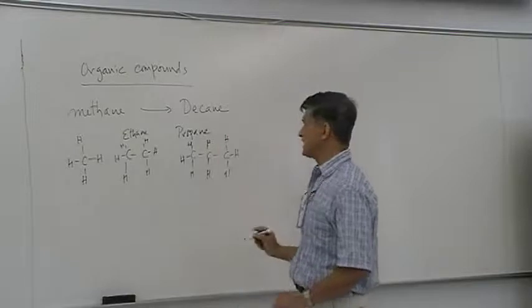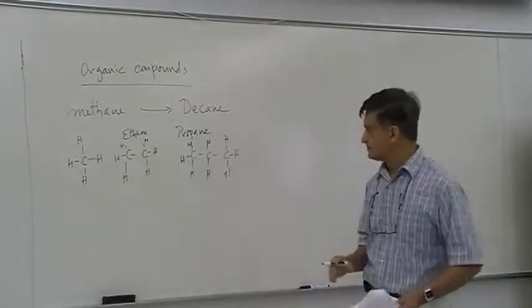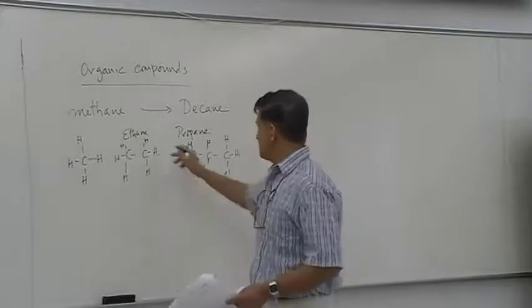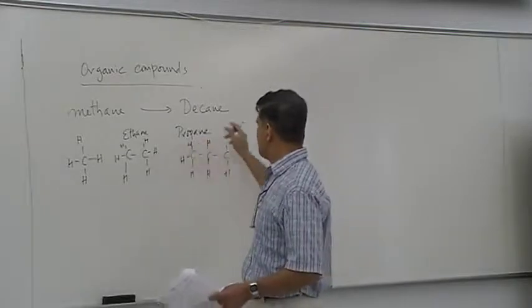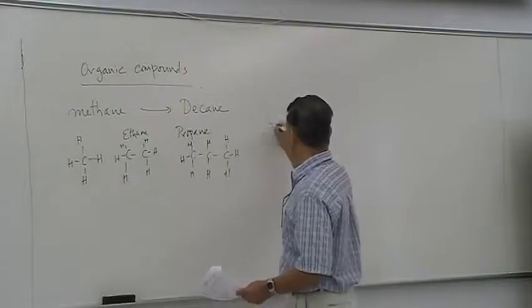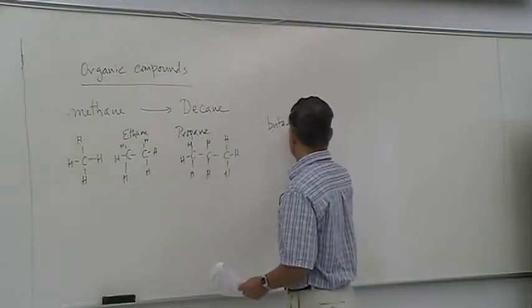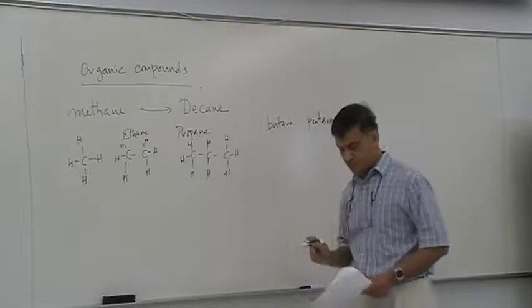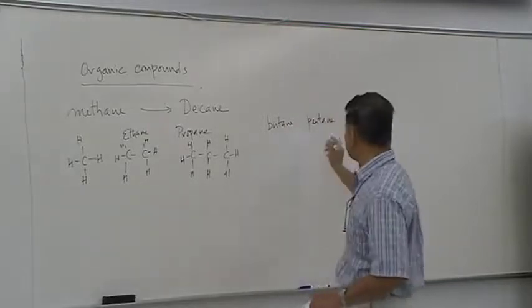These are called alkanes. There is no double bond. And in exam, I'd be only asking you names of alkanes. The third one is propane. Fourth one is butane. So in the same way, you can get butane. Pentane. After butane, names are much more straightforward because penta means five. So that means there are five carbons.